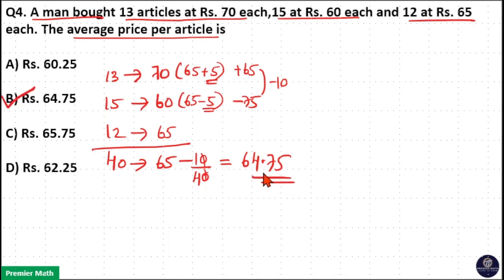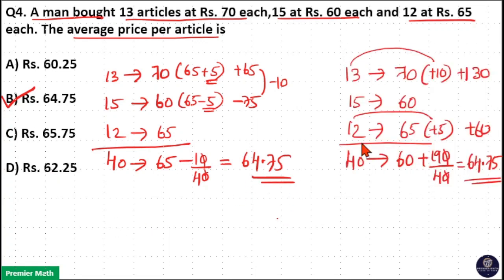That is, average price per article is 64.75. You can also calculate this using 60 as common average. Here, 60 is the common average. You can also calculate using 60 as common average. Either way, your answer will be same.